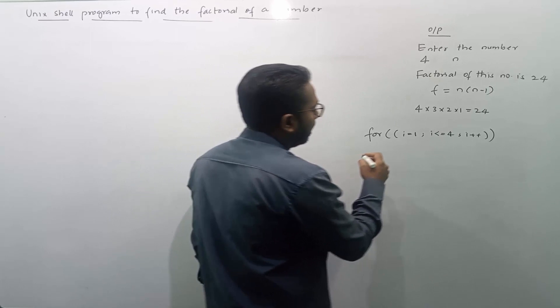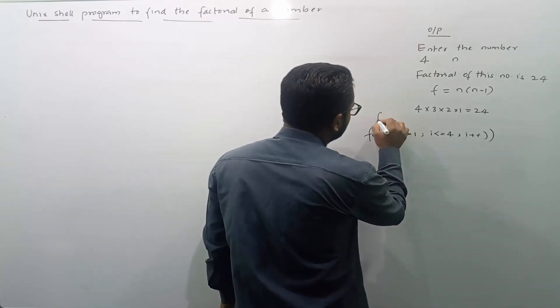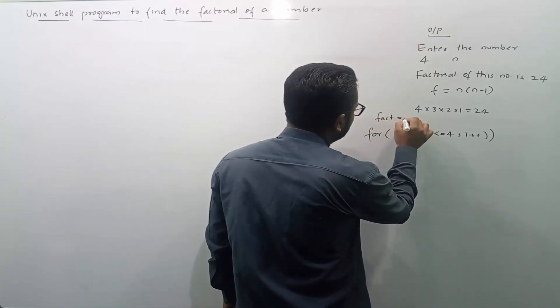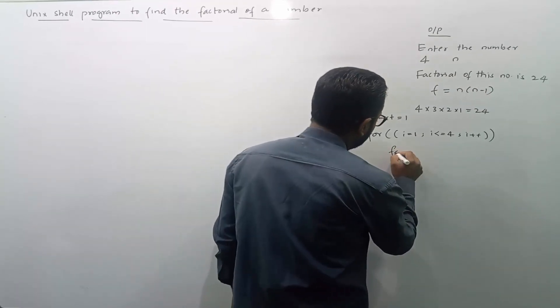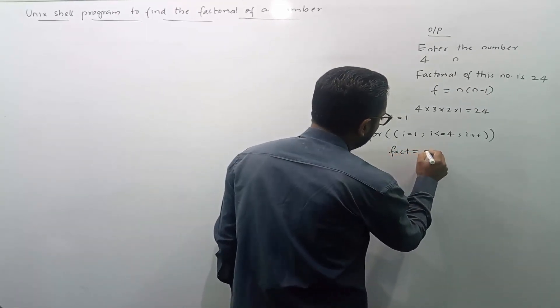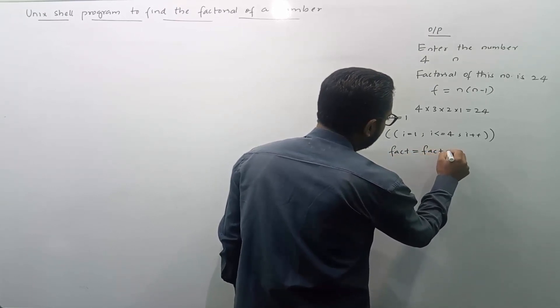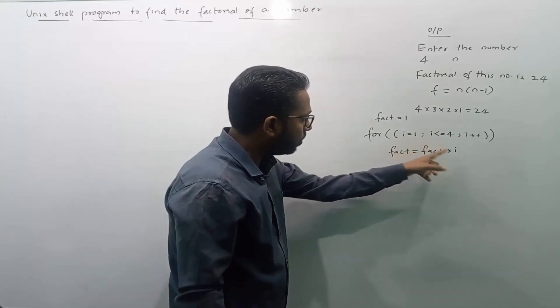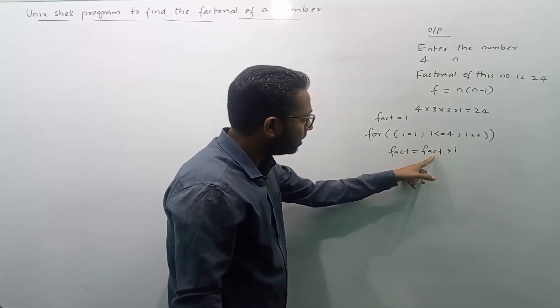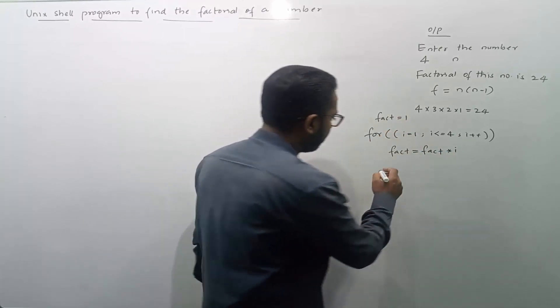And I need to initialize a variable, let us say fact is equals to 1. Then now I need to calculate fact equals to fact into i. Now the first time when the i value was 1, 1 gets multiplied with the value of fact which is 1.